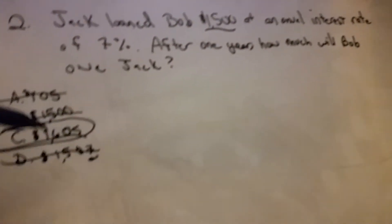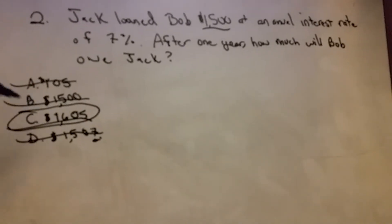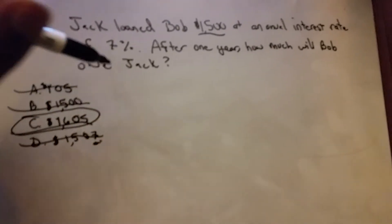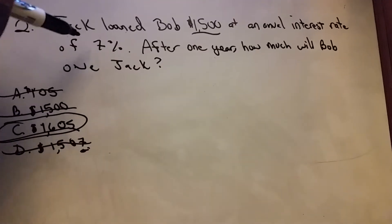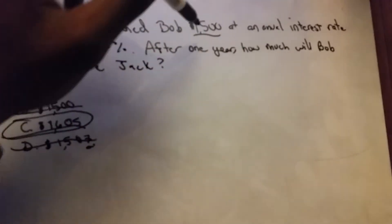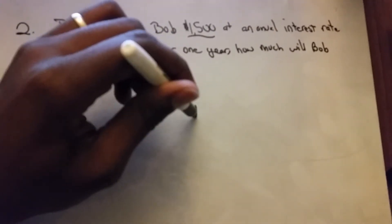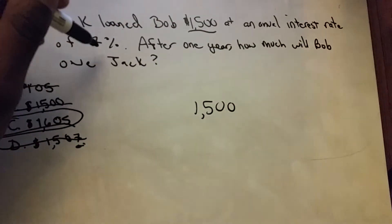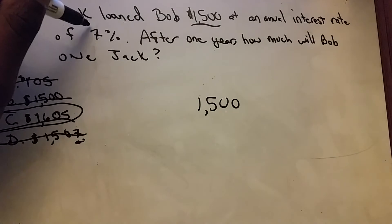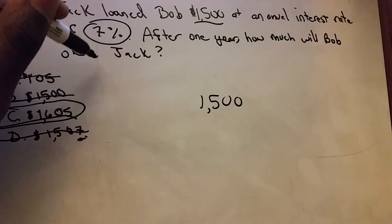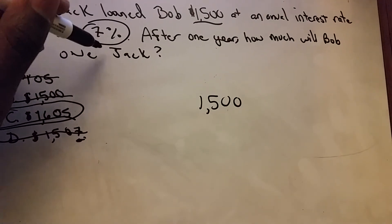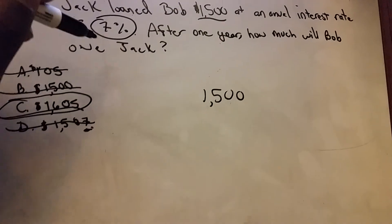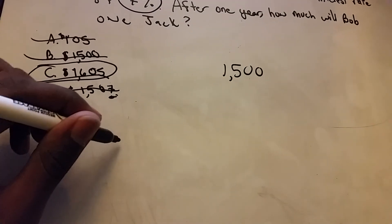To figure out the answer to this, you would have $1,500 and you would multiply that by 7%. So when you have a percent, in order to make that into a decimal, you have to move the decimal place two places to the left.